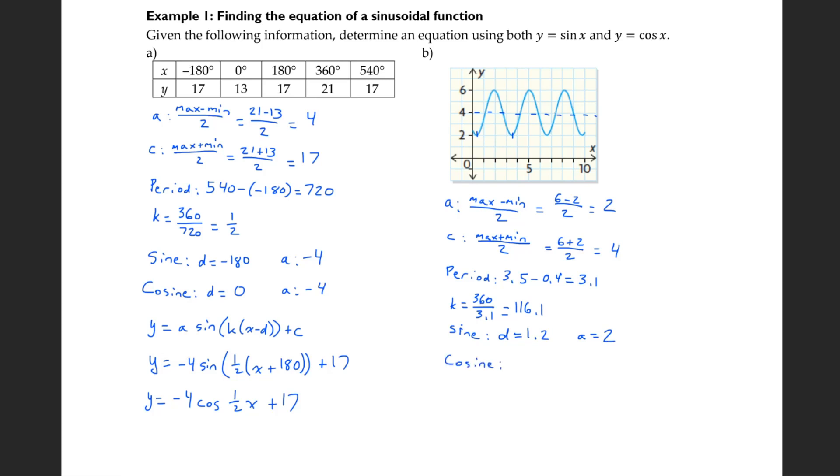Cosine, on the other hand, you have to look at when it starts at its maximum or its minimum, which is here, which is about 1.8. And again, it's its maximum, so a is going to be 2. I could have used 0.4, and then that would have been its minimum and made a negative 2. That would work.